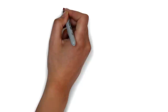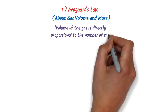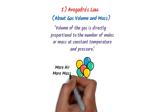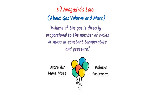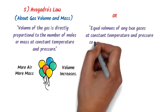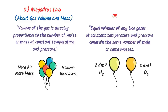The fifth law is Avogadro's law, based on volume and mass of a gas. It states that volume is directly proportional to the number of moles or mass of the gas at constant temperature and pressure — like filling balloons with more air increases their volume. Avogadro's law can also be stated as: equal volumes of any two gases at constant temperature and pressure contain the same number of moles. For example, 2 dm³ of hydrogen and 2 dm³ of oxygen at the same temperature and pressure contain equal numbers of molecules.